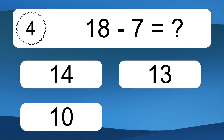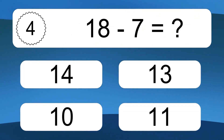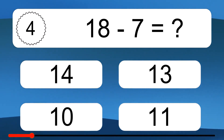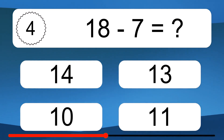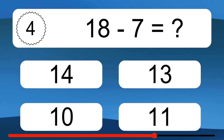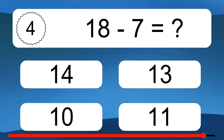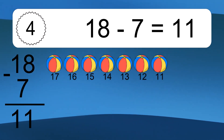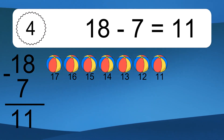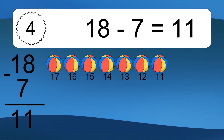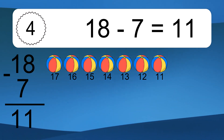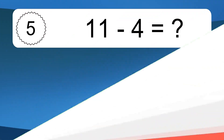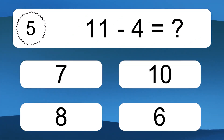18 minus 7 equals what? 18 minus 7 equals 11. Let's count it. 17, 16, 15, 14, 13, 12, 11.